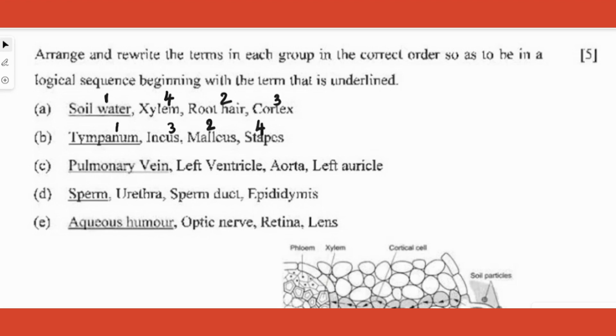Next question: pulmonary vein, left ventricle, aorta, left auricle. How do we do this? Let's draw our heart in the shape of a rectangle so that we can easily label it. You know upper chambers are called auricles, below chambers are called ventricles, and this side is the left side and this side is the right side.